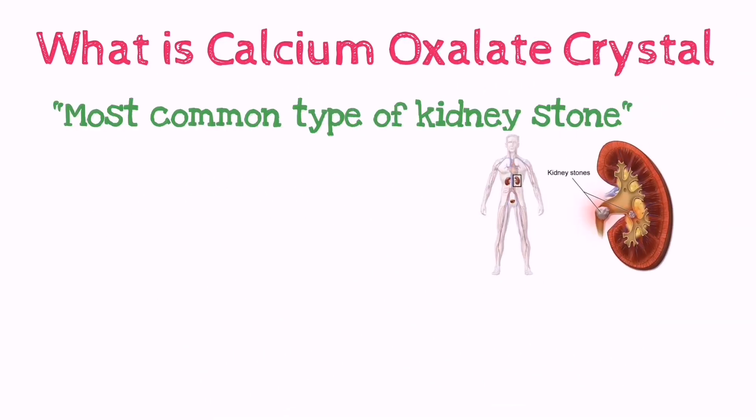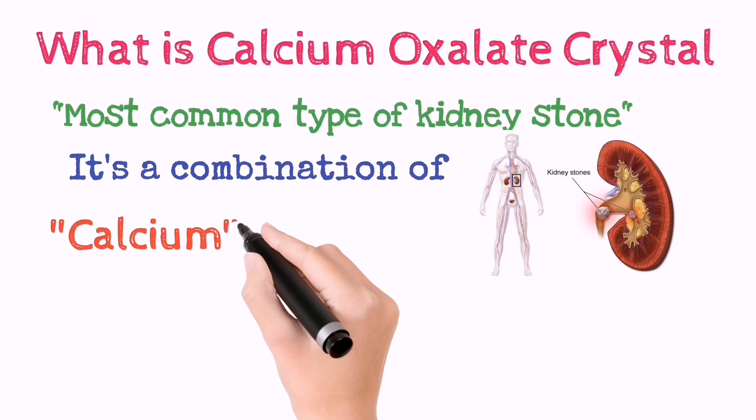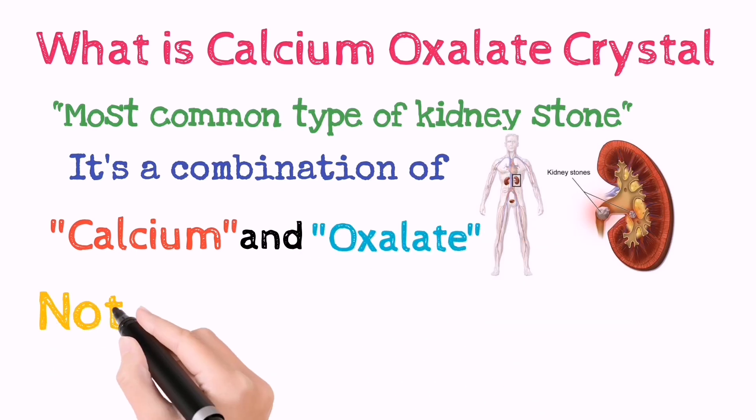Calcium oxalate crystal is the most common type of kidney stone or crystal formed when calcium combines with oxalate. Remember, usually calcium oxalate stone forms when there is too much calcium or oxalate in the body or too little urination.